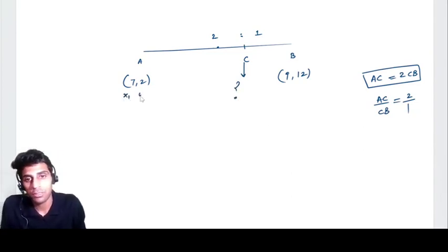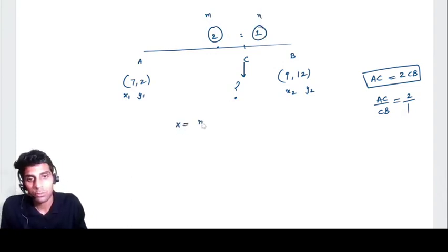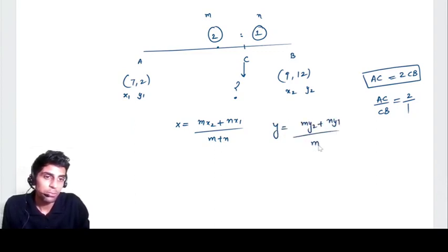We need to calculate the coordinate for C. So we can treat this as x1, this as y1, this as x2, y2. This one I can treat as m, this one I can treat as n. And I simply apply the formula: x is equal to mx2 plus nx1 divided by m plus n, y is equal to my2 plus ny1 divided by m plus n.